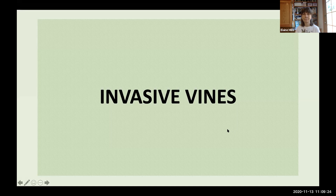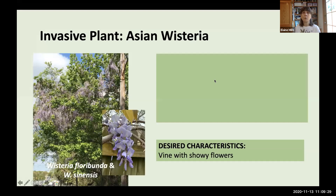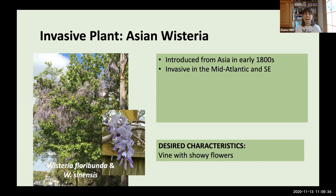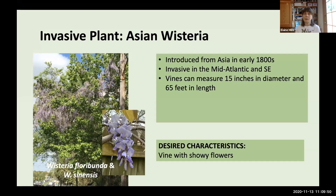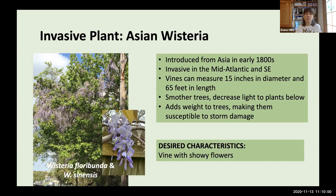Finally, we'll look at some invasive vines. The first is Asian Wisteria from both Japan, Wisteria floribunda, and China, Wisteria sinensis, introduced several hundred years ago and now invasive in both the Mid-Atlantic and the southeast. It grows very aggressively — up to 15 inches in diameter at the base and 65 feet in length. It can grow up and smother trees, decreasing light to plants below while adding considerable weight to trees, making them more susceptible to storm damage.